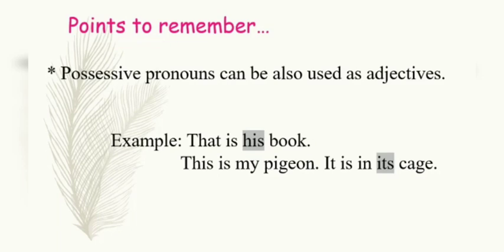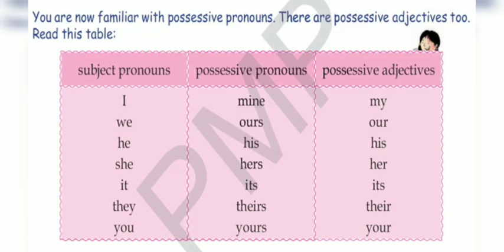Points to remember: possessive pronouns can also be used as adjectives. For example, 'That is his book' — here 'his' is showing about the possession of the noun, so it is used as a possessive adjective. 'This is my pigeon. It is in its cage.' Here it is telling us about the possession of the noun, so 'its' is the possessive adjective. You are already familiar with possessive pronouns; there are possessive adjectives too. A possessive adjective indicates the possession of the noun to a person, place, or thing.